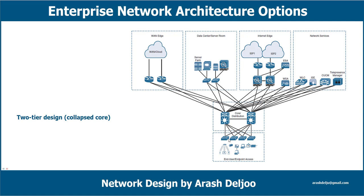End users and endpoints, through the distribution and core layers, can also connect to the local data center or server room. Here we have business-critical servers that serve websites, corporate email, business applications, storage, big data processing, backup services, e-commerce transactions, and so on. They can also connect to the internet edge for regular internet access, e-commerce, connections to remote branches, remote VPN access, and cloud provider connectivity.